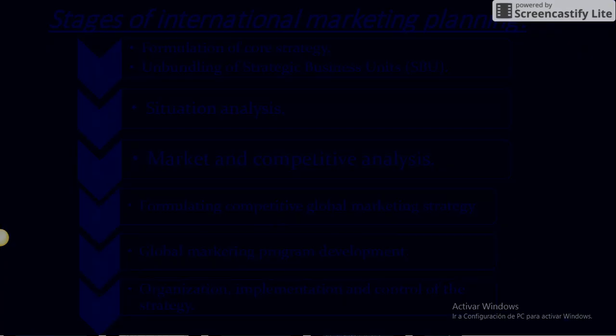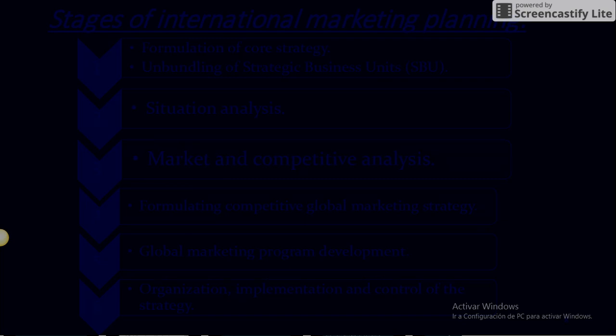Stages of International Marketing Planning: 1. Formulation of core strategy and unbundling of strategic business units (SBU). 2. Situation analysis. 3. Marketing competitive analysis. 4. Formulating competitive global marketing strategy. 5. Global marketing program development. 6. Organization, implementation, and control of this strategy.